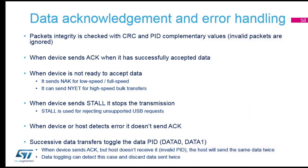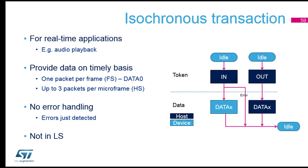Data acknowledgement summary: the CRC and the PID complementary value ensure packet integrity. The device sends ACK when successful, NAK when not ready or there's a problem, and STALL to stop the transmission — meaning it's not supported. Also remember the toggle DATA PID: you always switch from DATA0 to DATA1 to ensure no frames are missed. That was the bulk transfer explanation.